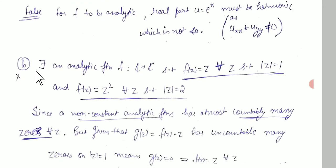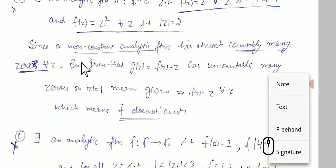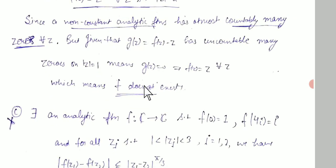Statement B: does there exist an analytic function f: ℂ → ℂ such that f(z) = z for all |z| = 1 and f(z) = z² for all |z| = 2? Define g(z) = f(z) − z. On |z| = 1, g(z) = 0, so g has uncountably many zeros. But a non-constant analytic function can have at most countably many zeros. Hence g(z) = 0 everywhere, meaning f(z) = z — contradicting f(z) = z² on |z| = 2. So no such function exists.